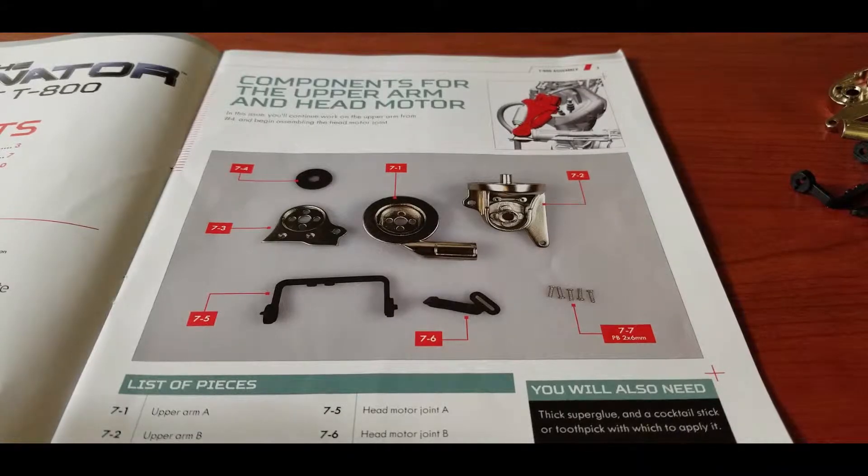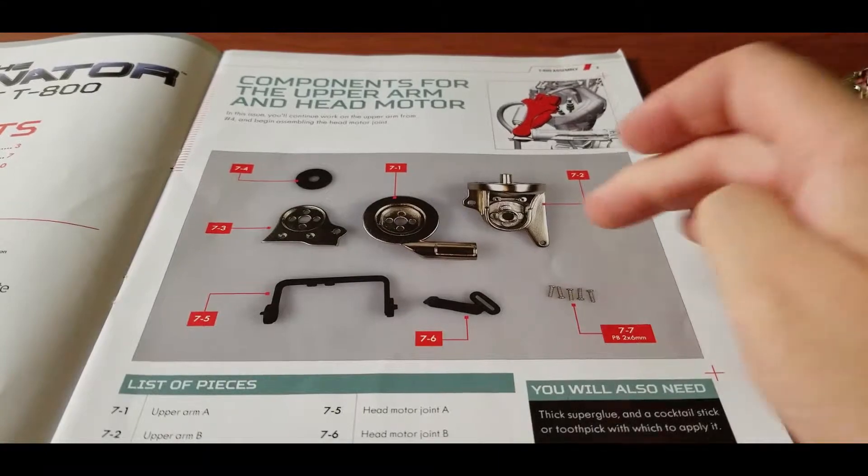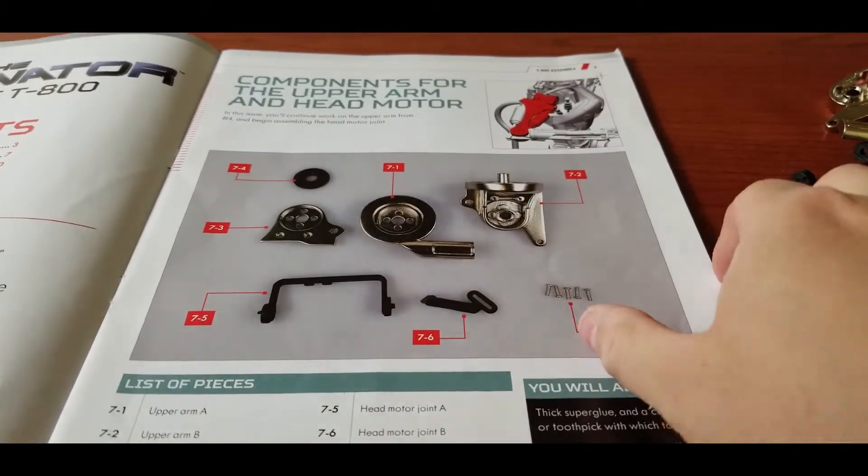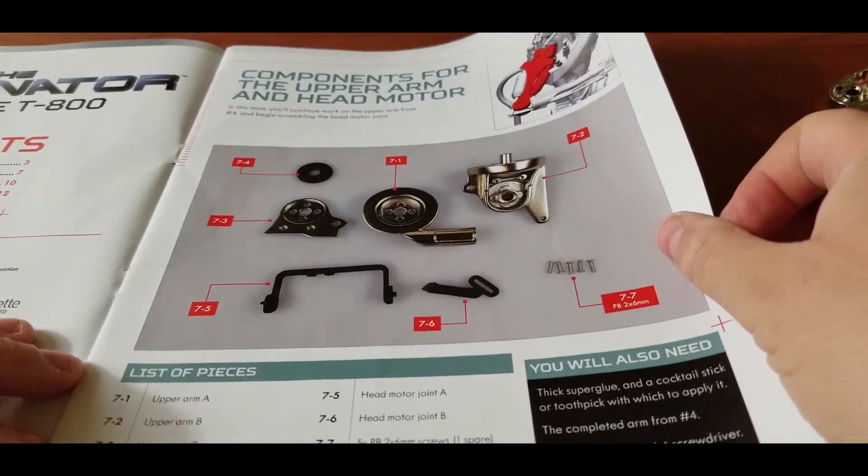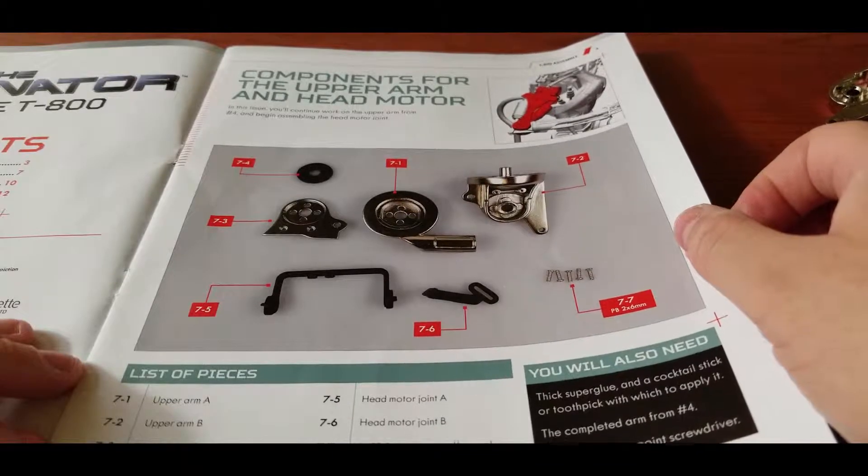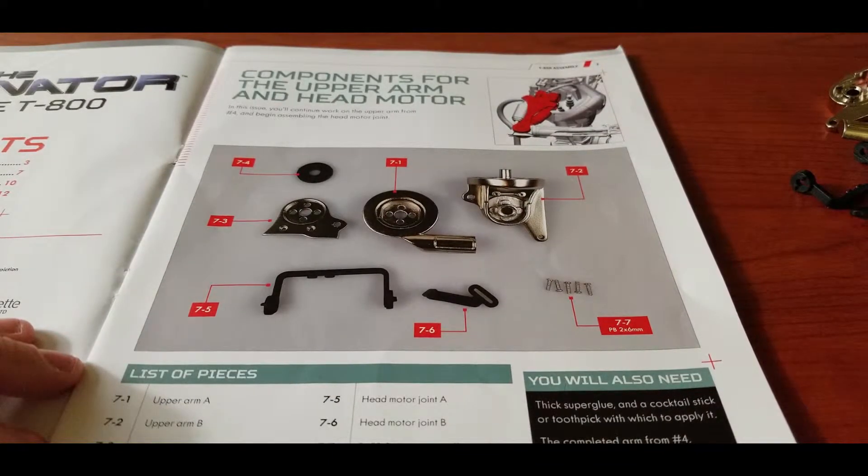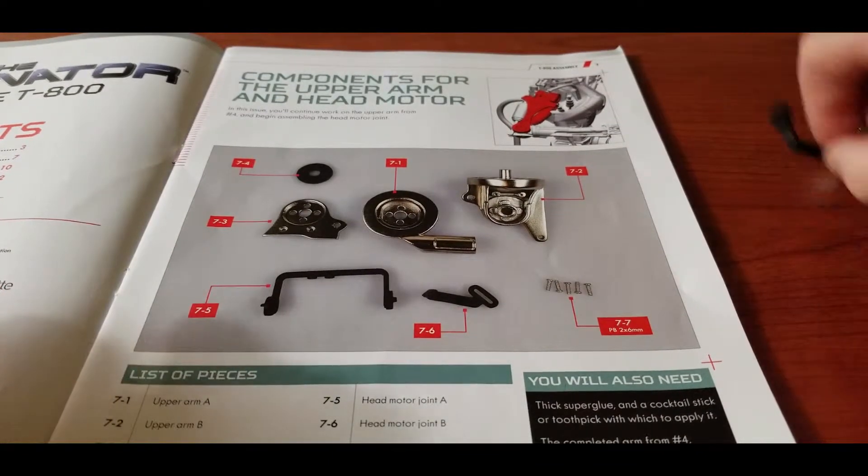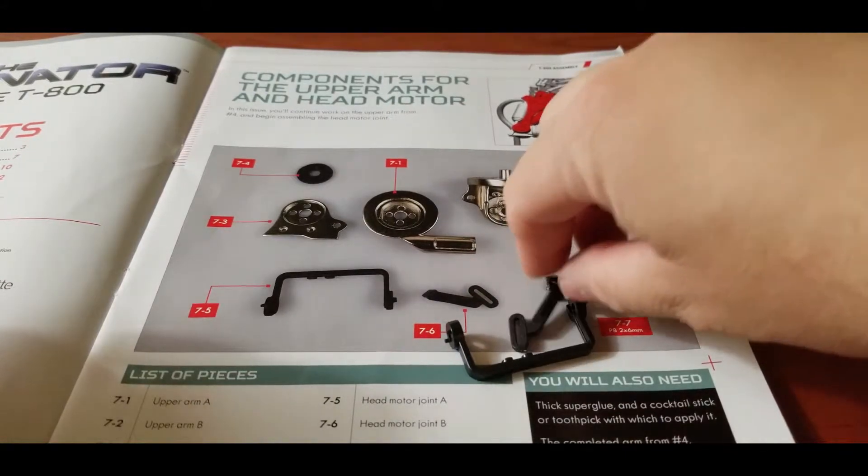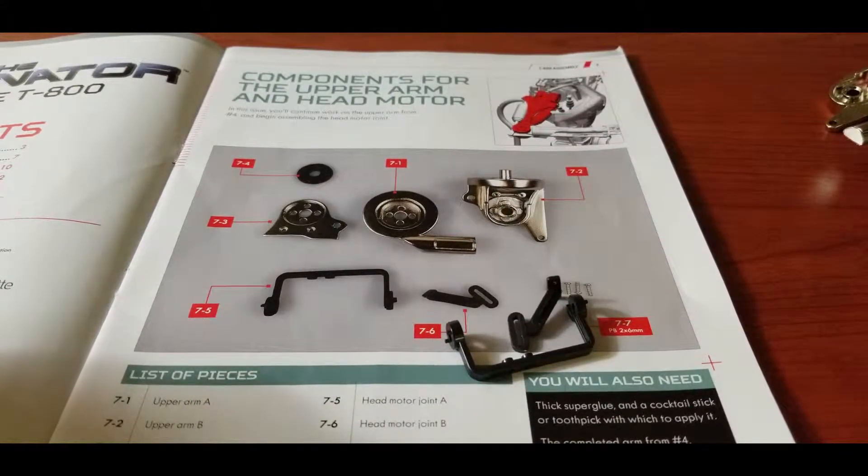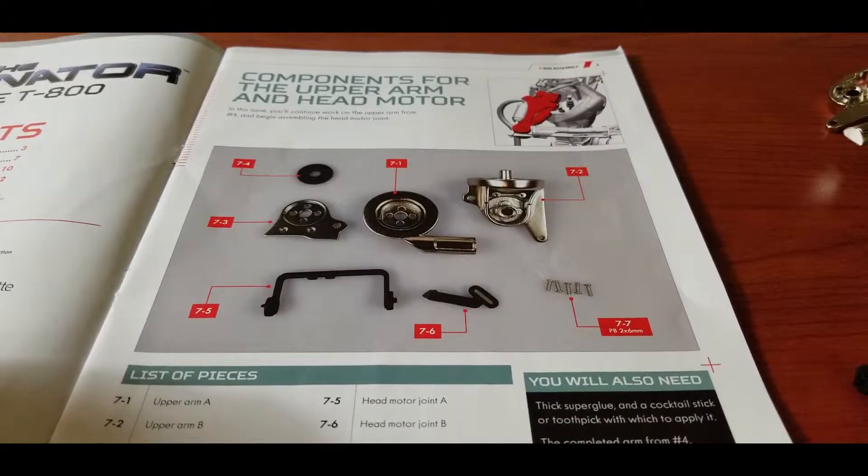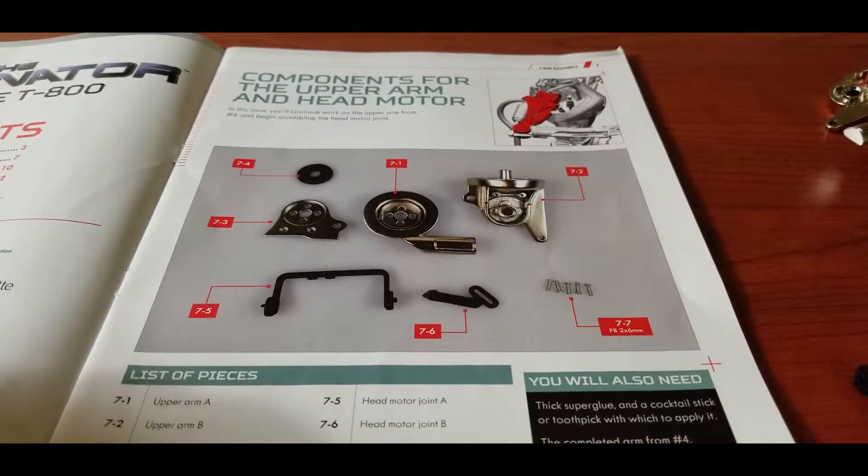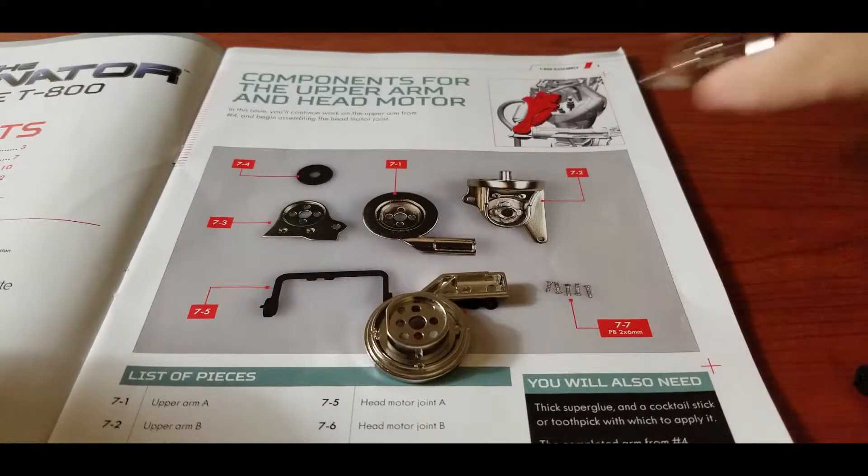Okay as you can see we're going to be doing some fun parts here. Not too much. You get, let's see, the head motor joint A and B which are these two little parts here which we'll be putting together. Screws come with the kit. Of course there's always going to be one extra. You have the upper arm parts here.